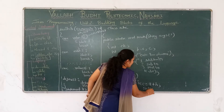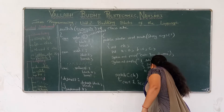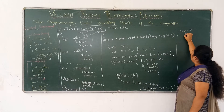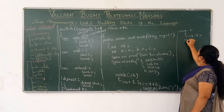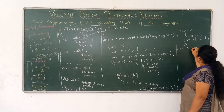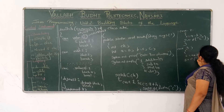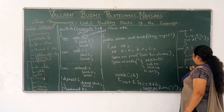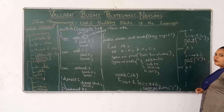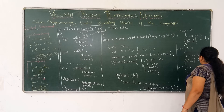We then use System.out.println to print the answer c. Then we move to case 2, which is subtraction: c = a minus b, followed by System.out.println to print c. Case 3 is multiplication: c = a multiplied by b, with System.out.println to print the answer. Each case must have a break statement. Case 4 is division: c = a divided by b, followed by System.out.println to print c, and then a break.